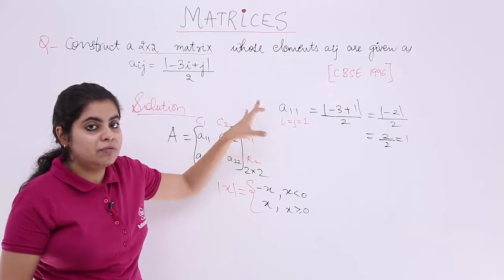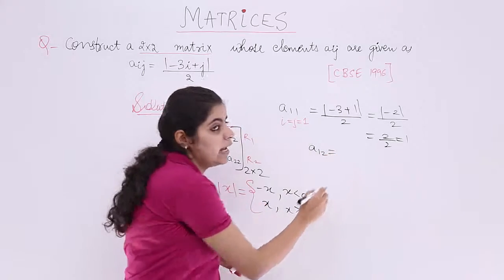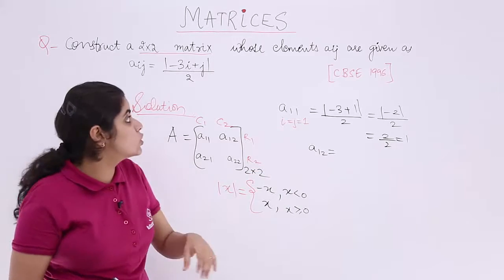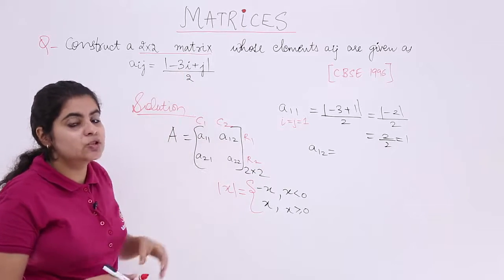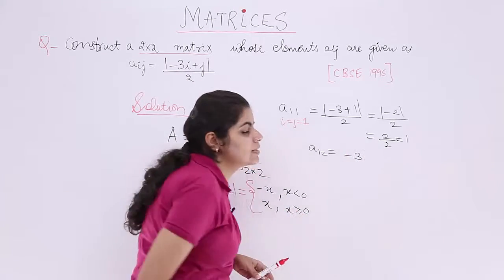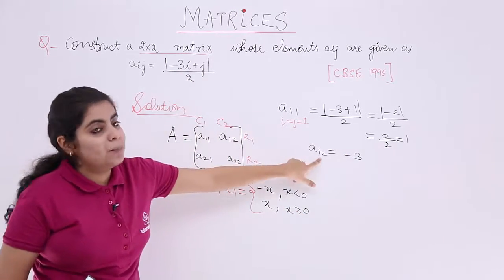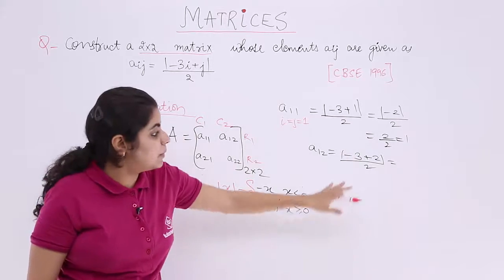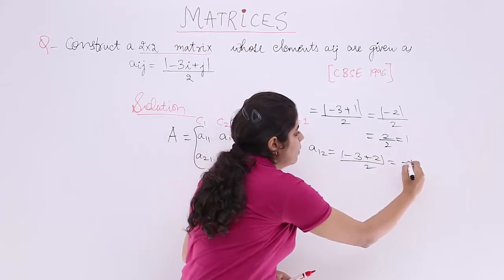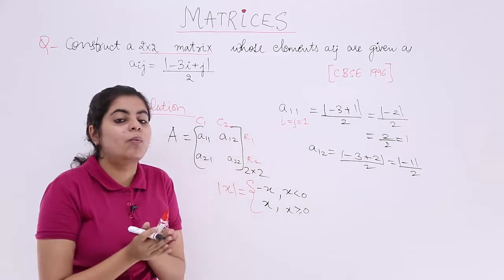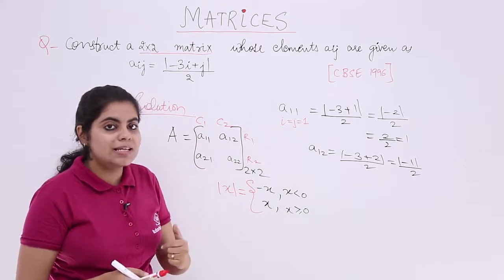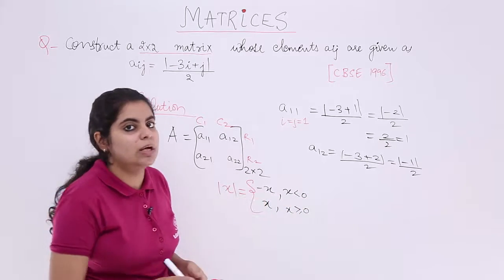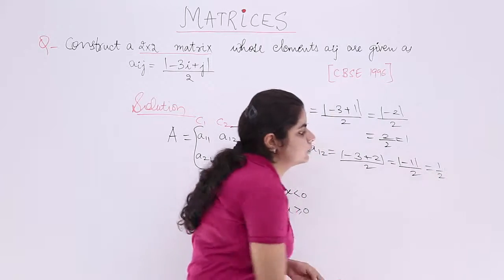What about A12? That means i is 1, j is 2. Put in the formula. Minus 3 into 1 is minus 3 plus j plus 2 whole upon 2. Now what is minus 3 plus 2? Minus 3 plus 2 is minus 1. Minus 1 mod upon 2. Again what is inside mod? Minus 1 is less than 0, so minus x. That means minus of minus 1 which is plus 1. So it is 1 upon 2.